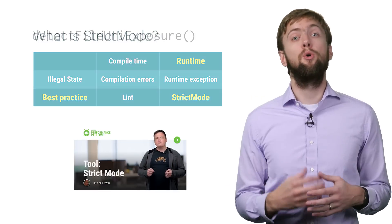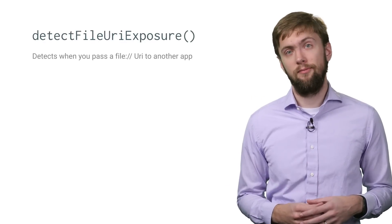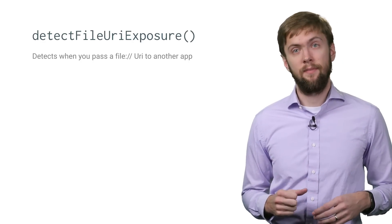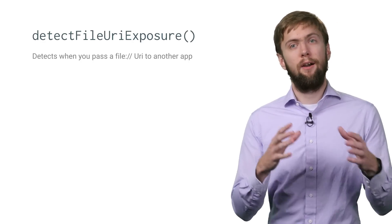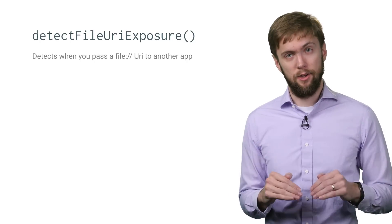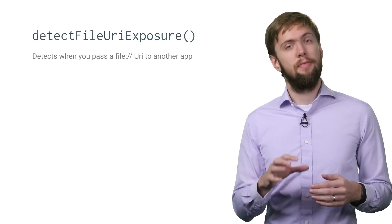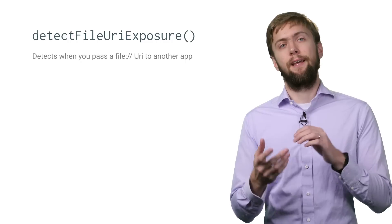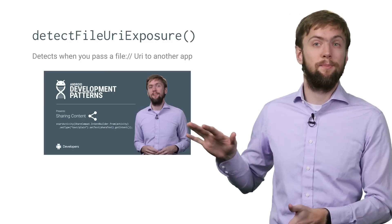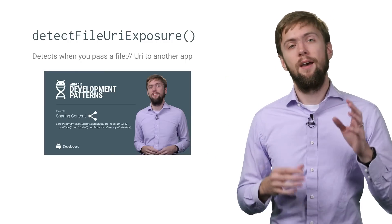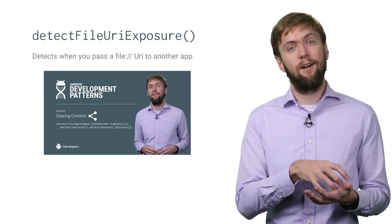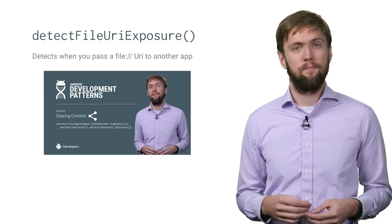Let's talk about the cool new stuff, like VM policies detectFileUriExposure. If you're sharing content with other apps, you do not want to be using file URIs. They require storage permissions, and they can't cross between users. Just watch my dev byte on sharing content. The strict mode check just makes sure that those file URIs don't make it out to other apps.